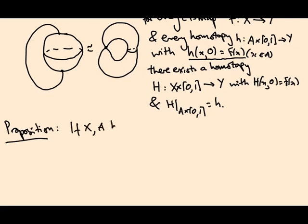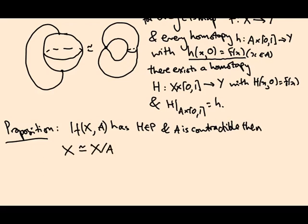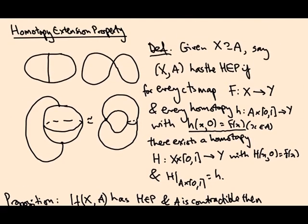If (X,A) has the homotopy extension property, and A is contractible, then X, just the space X, is homotopy equivalent to the quotient space X/A where we crush A to a point. So if we go back to these pictures, what's happening here is in this top picture this red guy is subset A, and that gets crushed down to this point, and in the second guy this arc is the subspace A, and that gets crushed down to this point. So in each case we're saying this quotient space is homotopy equivalent to the thing we started with.